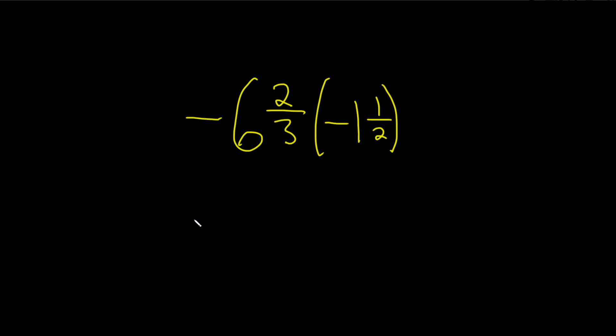So we have two negative mixed numbers and we have to multiply them. The first step will be to turn these into improper fractions. So here's how you do it.